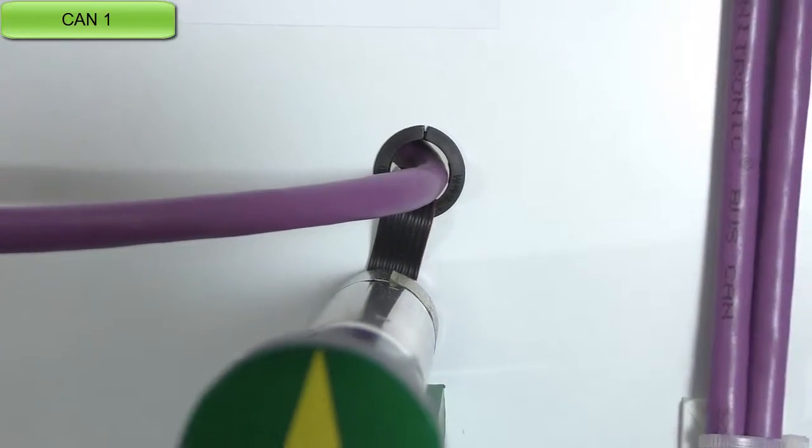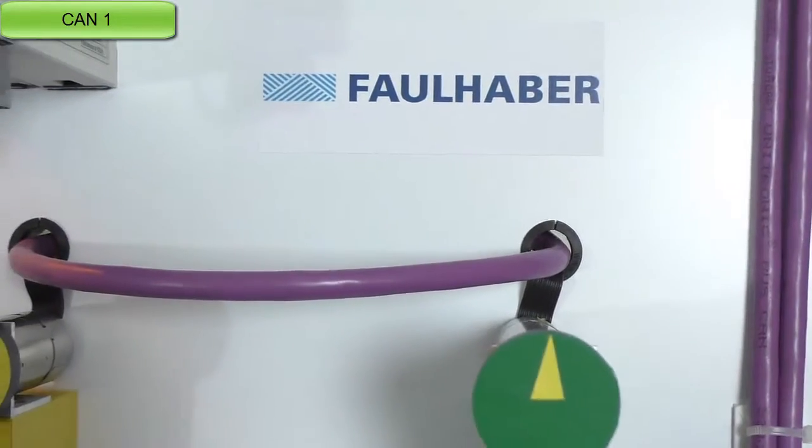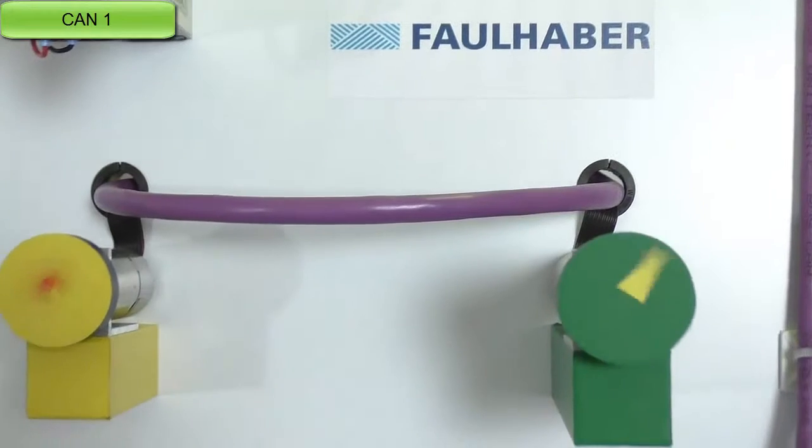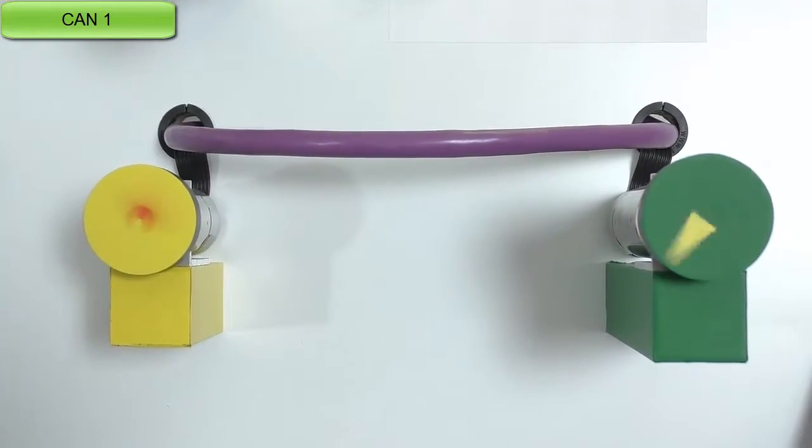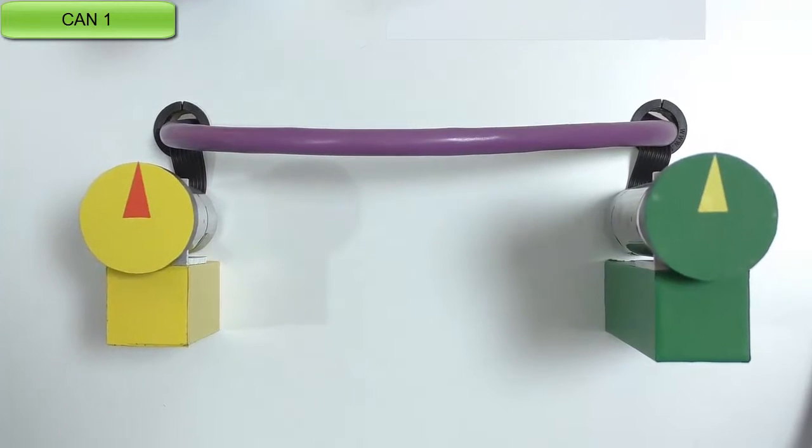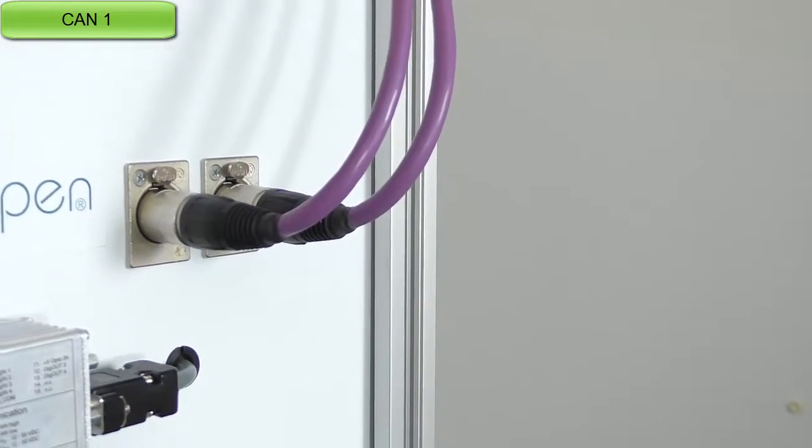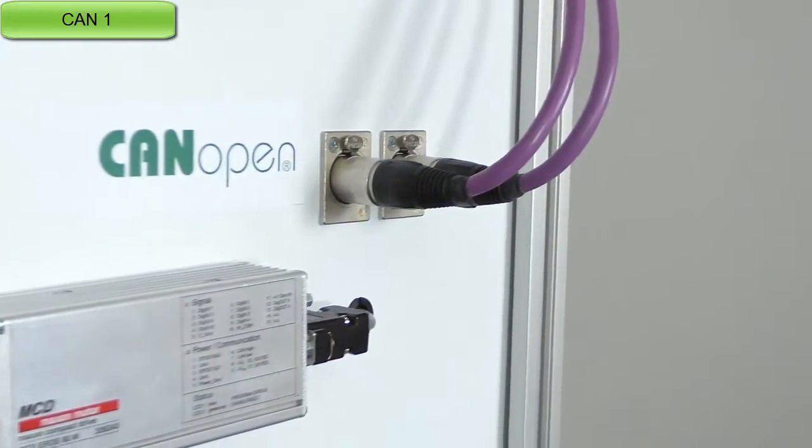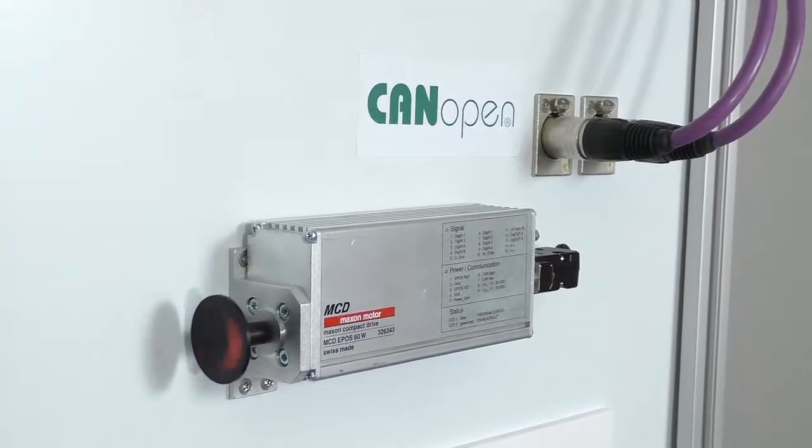From here on we follow the lines going to two Faulhaber motors with integrated amplifier and CAN bus interface. You can see those are very compact drives. From there we go to a Maxon MCD with integrated amplifier and CAN bus.